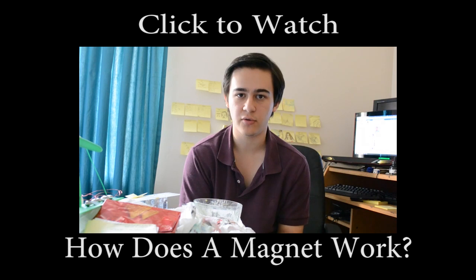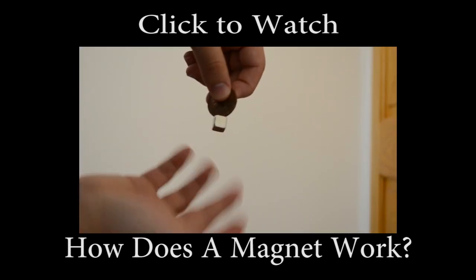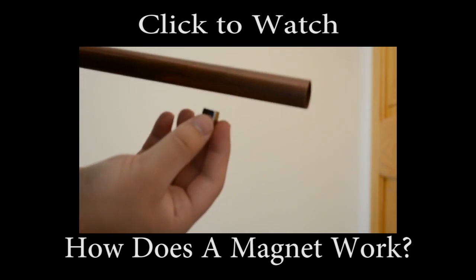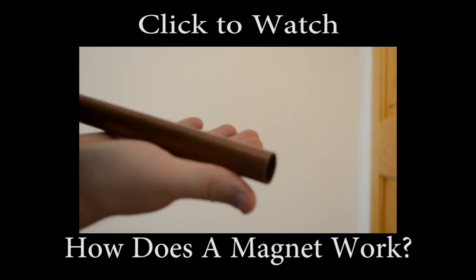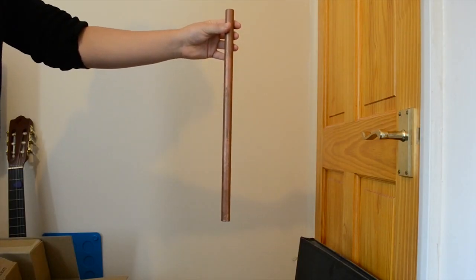To explain what this means, I'm going to use a demonstration from a previous video. Moving a magnet past a conductor is the same as moving a conductor through a magnetic field. So if we drop a magnet through a copper pipe, EMF or voltage will be induced, and so will eddy current. You'll notice the magnet falls very slowly through the copper pipe, because the magnetic fields from the eddy currents are pushing back on it.